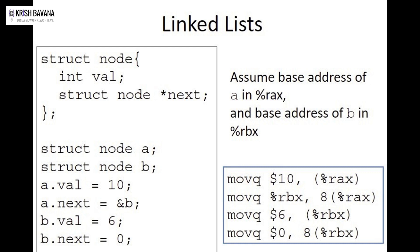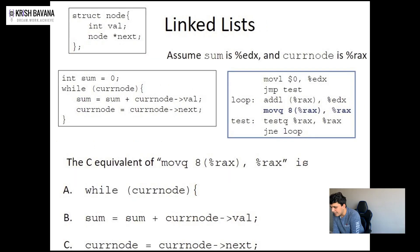Now if we have to do the same thing in assembly: RAX is the main register holding the value 10 — that's a.val. Then RBX is a new register at 8(%rax), meaning RAX plus 8, which points to the next struct. So RBX is b, and RAX plus 8 is RBX. Then we set RBX to 6, and 8(%rbx) equals 0. The 8 here represents the size of each struct, which is why RAX plus 8 points to the next node.